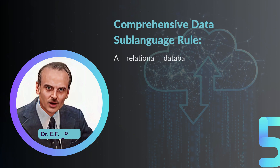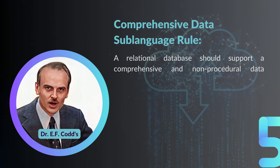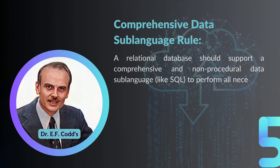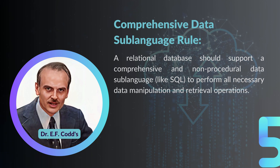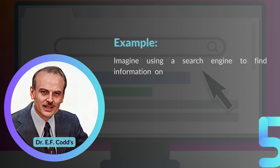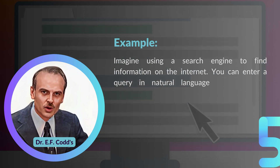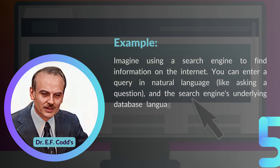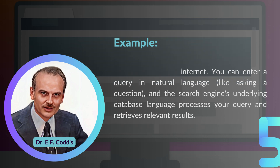Rule number five: the Comprehensive Data Sub-language Rule. A relational database should support a comprehensive and non-procedural data sub-language, like SQL, to perform all necessary data manipulation and retrieval operations. For example, imagine using a search engine to find information on the internet. You can enter a query in natural language, and the search engine's underlying database language processes your query and retrieves relevant results.